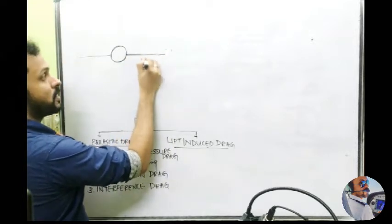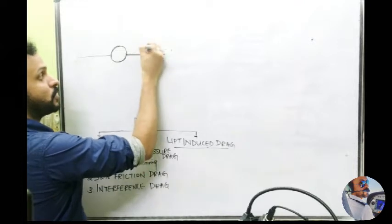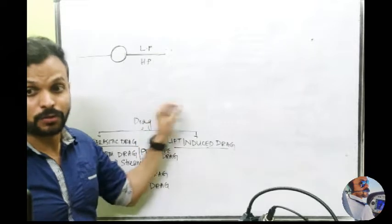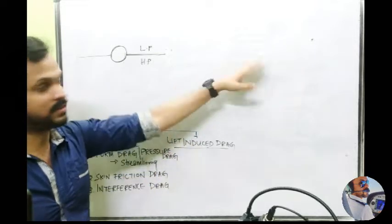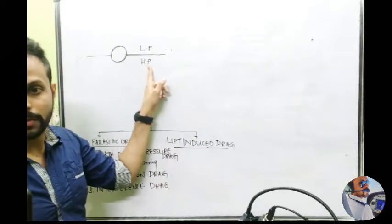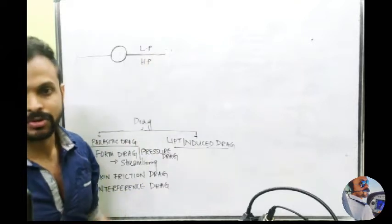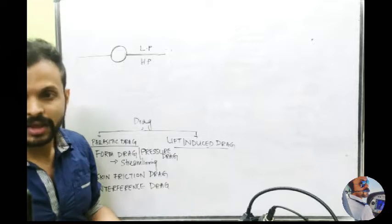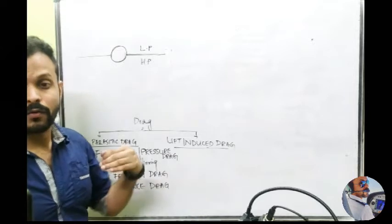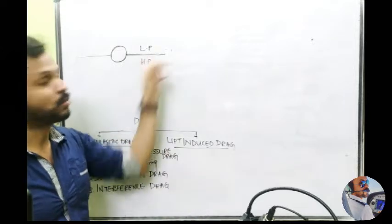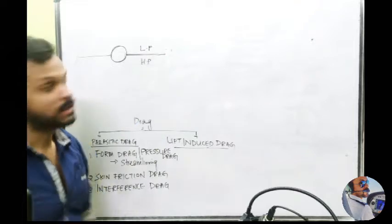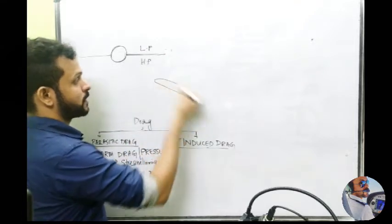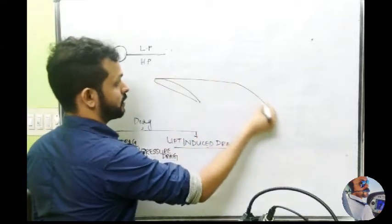The pressure underneath the wing is high and above it is lower pressure. I'm trying to explain lift-induced drag as simply as possible. The lower part of the wing has higher pressure and the upper part has lower pressure — cambering and all those things produce that. The tendency of air is always to go from higher pressure to lower pressure.